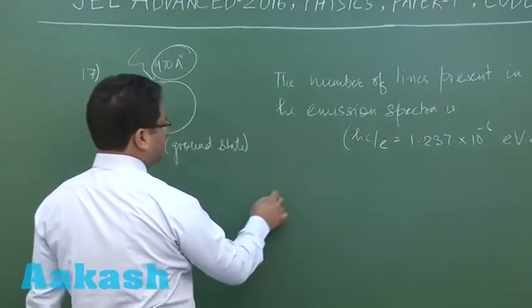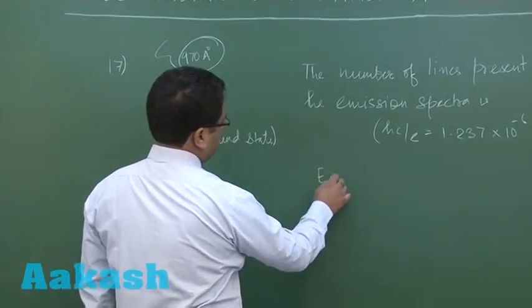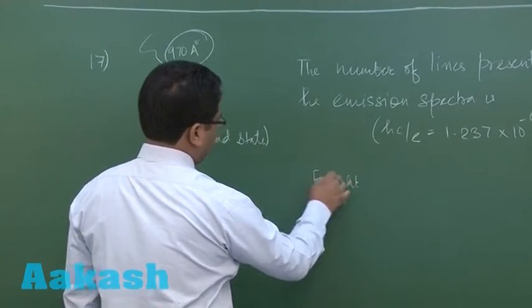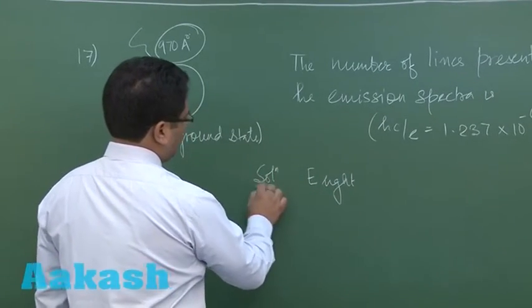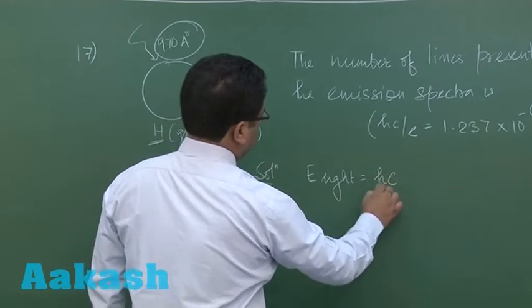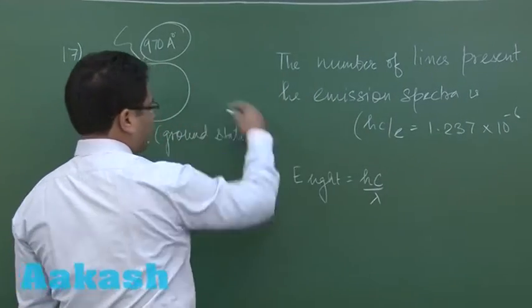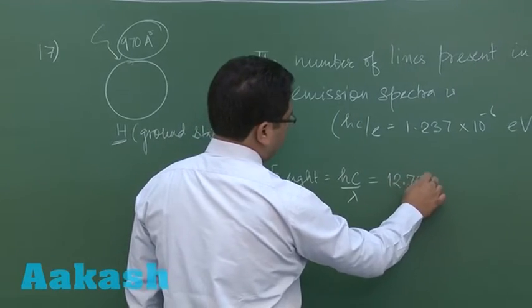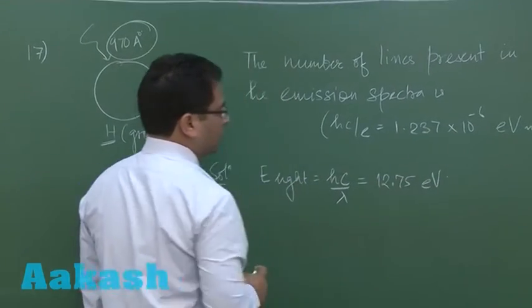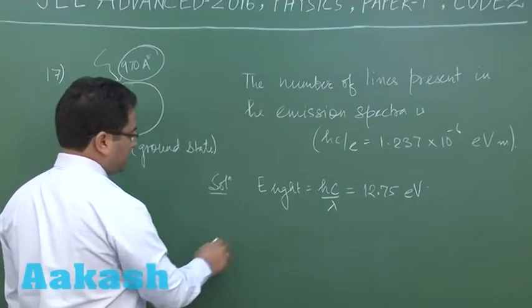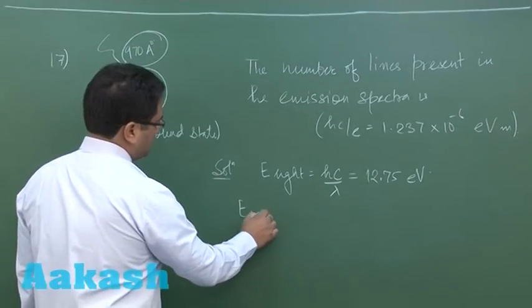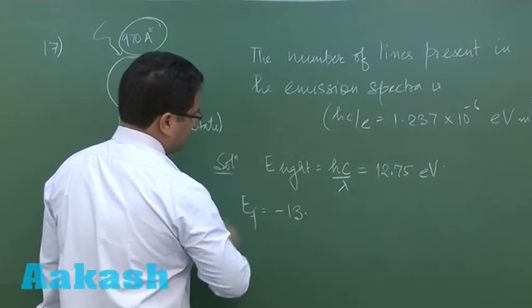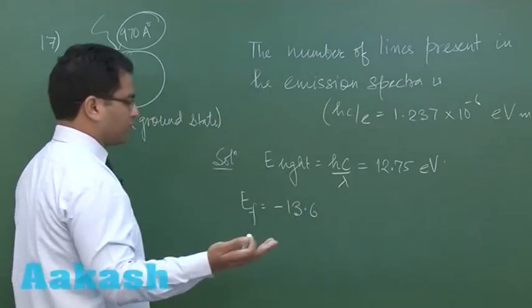Let's try to see the energy that is associated with light: hc by lambda. And all the values when you put—I had calculated it—that comes 12.75 electron volt. So what would be the final energy? That would be the original energy minus 13.6 electron volt, the ground state, very straightforward, plus 12.75. This would lead to minus 0.85 electron volt.